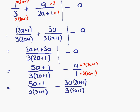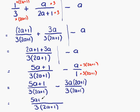We now have two fractions with a common denominator, so this can be written as a single fraction. Our denominator is still 3 times (2a plus 1), and on the top we have 5a plus 1 minus 3a times (2a plus 1).